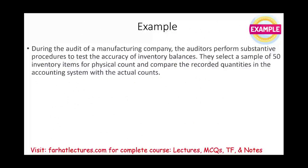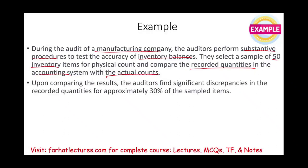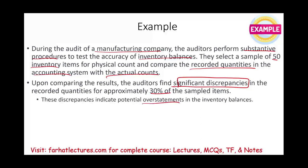For example, during the audit of a manufacturing company, the auditor performed substantive procedures to test the accuracy of inventory balances. They selected 50 inventory items for physical count and compared the recorded quantities in the accounting system with the actual count. Upon comparing the results, what did they find?